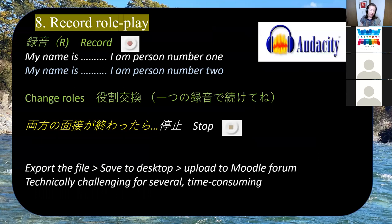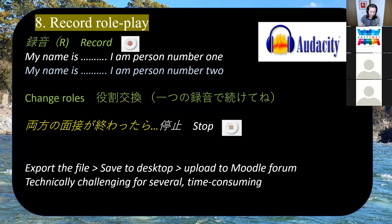After the role plays, activity eight was a recording of the role play. Students would sit down at their desk and with their partner record a role play on Moodle using Audacity. They'd introduce themselves at the start, do the role play, change roles, do it again, then export the file, save it, and upload it to Moodle. This activity was technically challenging for several students and quite time consuming.